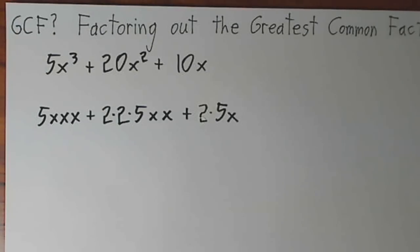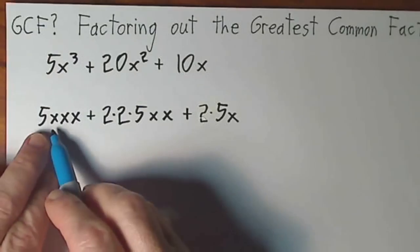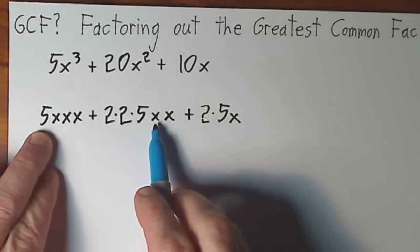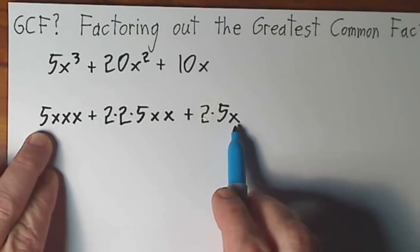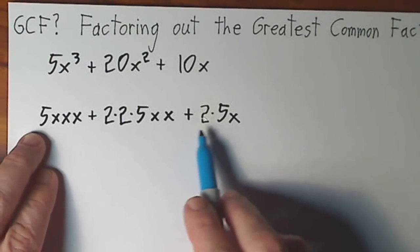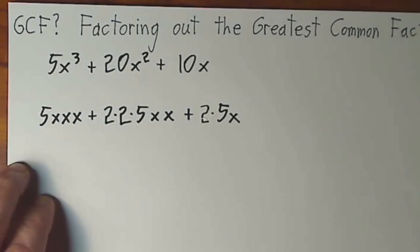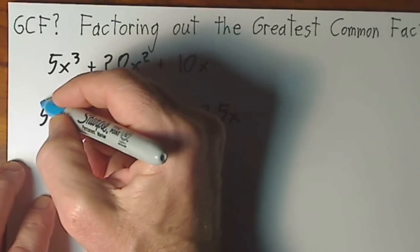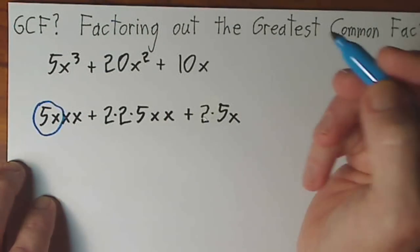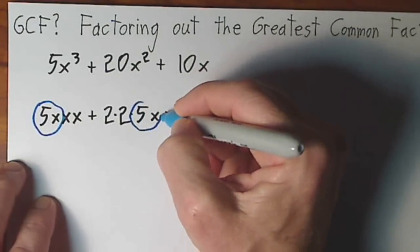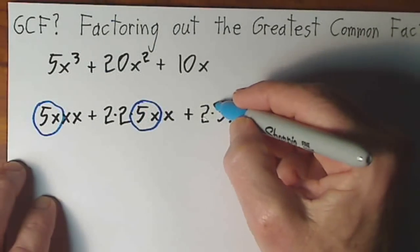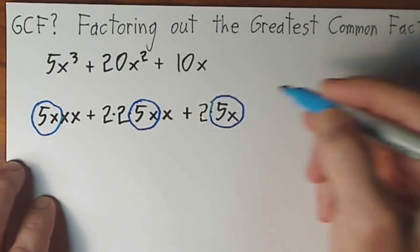Now we're looking for common factors. I've got a 5 and an x here, a 5 and an x here, a 5 and an x here. If I try to get anything more, I won't be able to get it out of each of these three terms. So that's to say I can get 5x out of here. I can get 5x out of there. I can get 5x out of there.